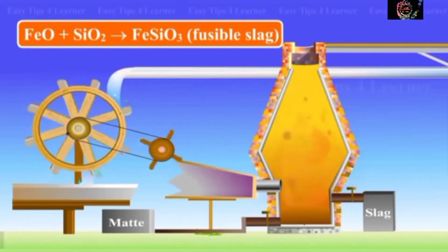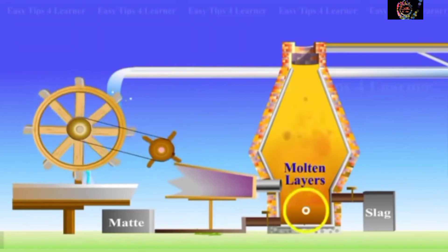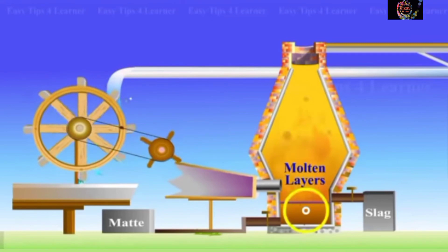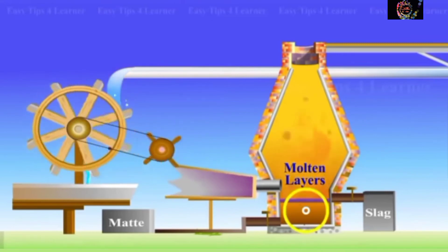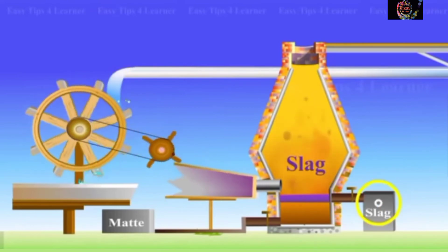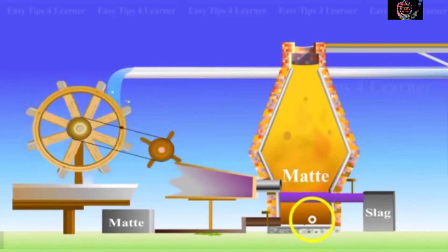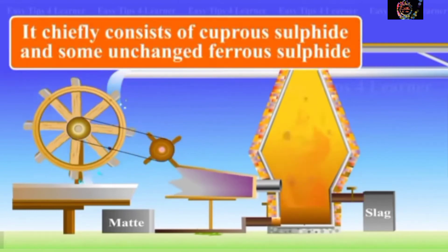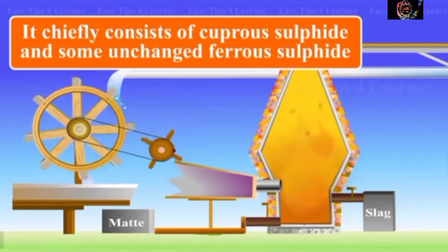As a result of smelting, two separate molten layers are formed at the bottom of the furnace. The upper layer consists of slag and is removed as waste, while the lower layer is called matte. It chiefly consists of cuprous sulfide and some unchanged ferrous sulfide.